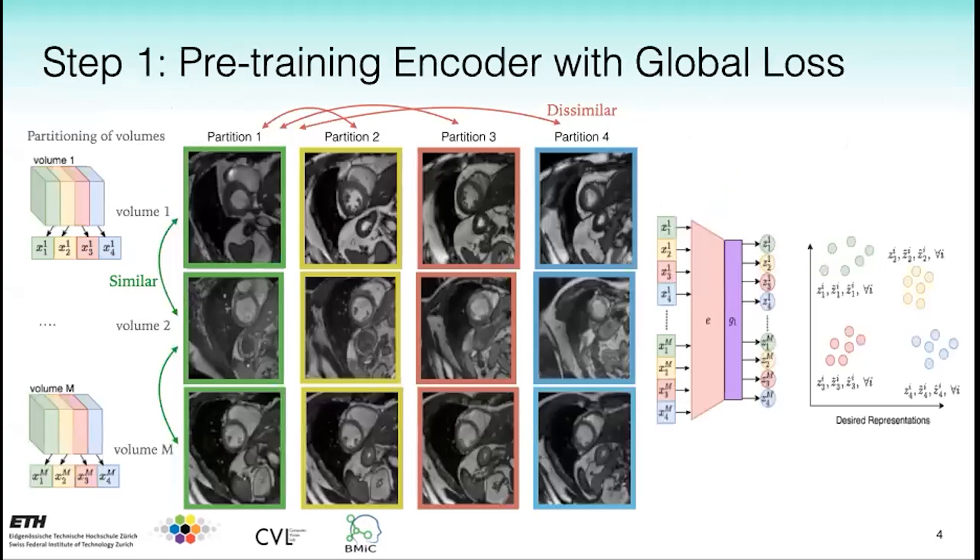Roughly aligned medical volumes can share similar global information across different subjects. Our contribution is to incorporate domain cues to define these positive and negative pairs which provide more complex similarity cues than random transformations.